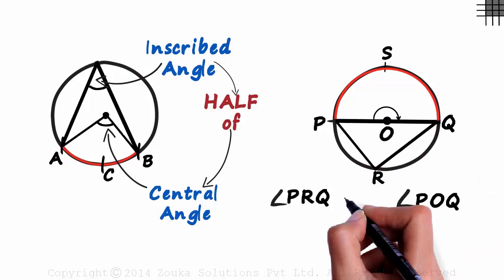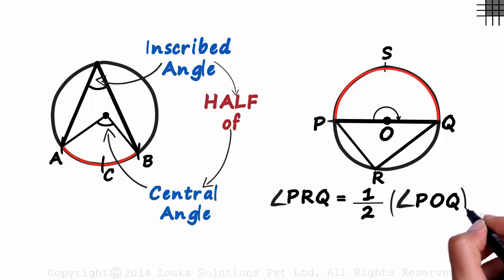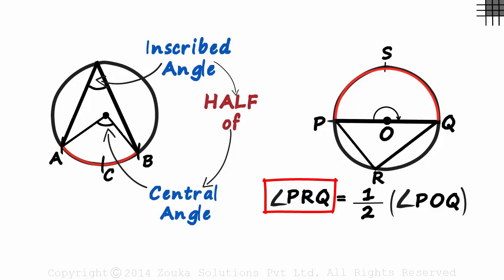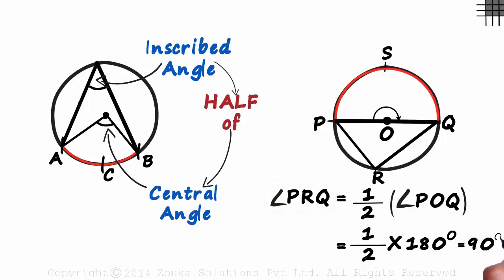The inscribed angle is half of the central angle. Angle POQ is a straight angle, so it measures 180 degrees. Therefore, angle PRQ measures half of 180 degrees, which equals 90 degrees — a right angle. PQ is the diameter and two semicircles are formed.